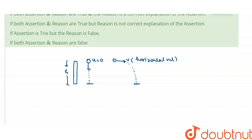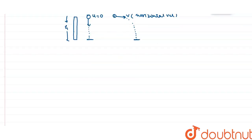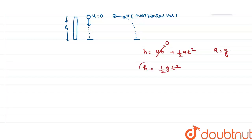The vertical component of the projected body's initial velocity is also zero. So in both cases, the initial vertical velocity is zero. Using the equation of motion for height: h = ut + ½at². Since initial velocity u is zero for both bodies, the term ut vanishes. Both bodies fall under gravity, so a = g, giving h = ½gt².